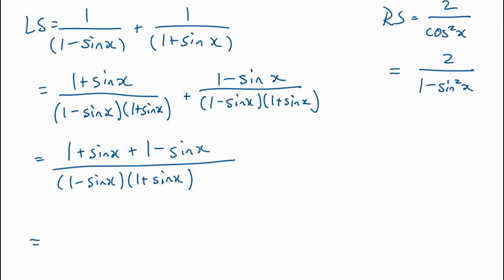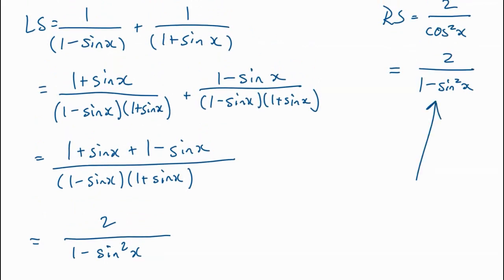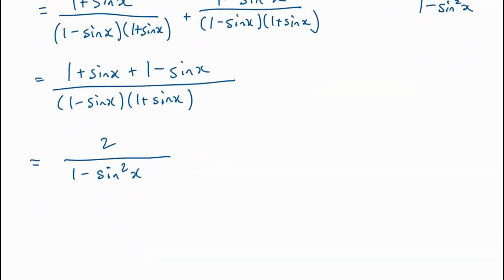So we get 2 over one minus sine squared x, which is the right side — and that's equal to what we were setting out to prove. If I hadn't done the cosine-squared swap earlier, I could do it now on either side to make them match. That's how that proof works.